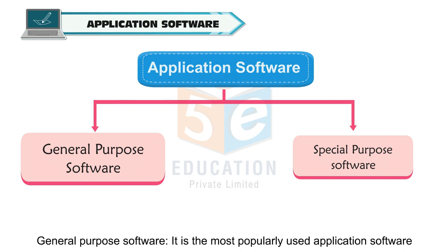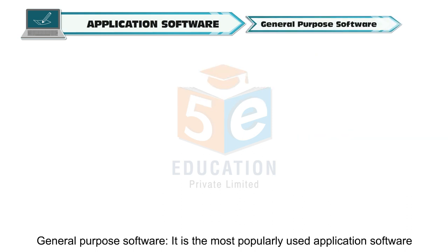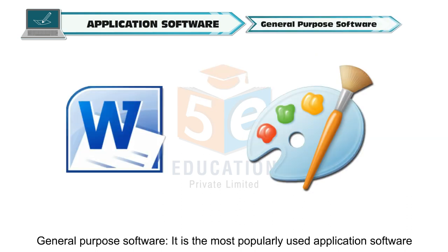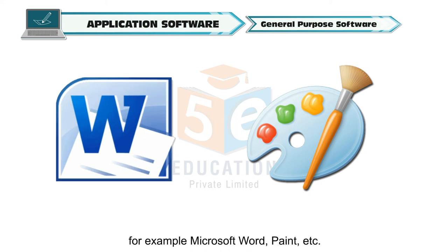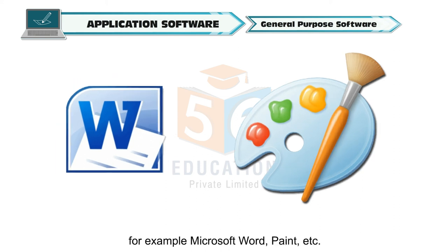General purpose software is the most popularly used application software. Examples include Microsoft Word, Paint, etc.